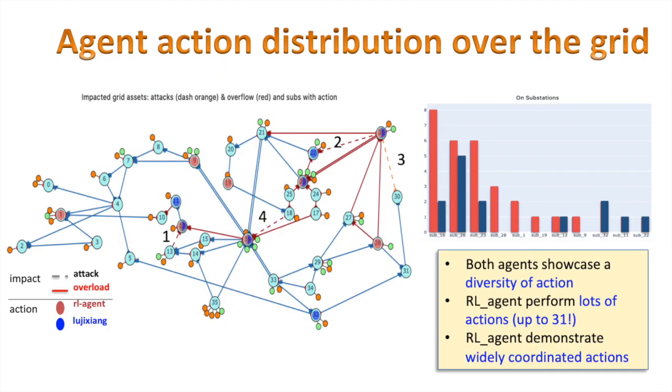To complete our high-level understanding of agent behaviors, we here look at the agent action distribution over the grid during the scenario. They both play on many substations all over the grid which display some diversity in their behavior. While some actions are similar between both, they don't necessarily play on the same substation and not at the same frequency. Herald agent performs a lot of actions, up to 31 during the scenario. Given that you have to carefully decide when to take an action, a random agent, for instance, fails in just a few time steps. Looks like quite a performance.